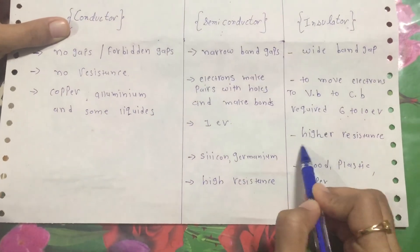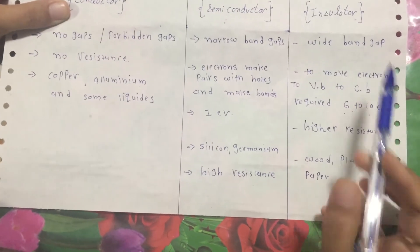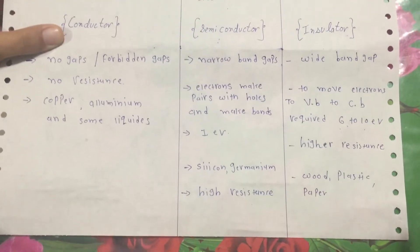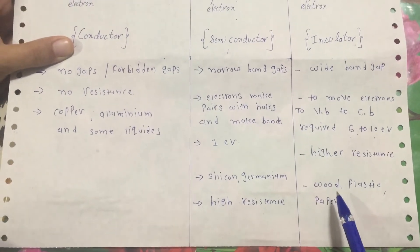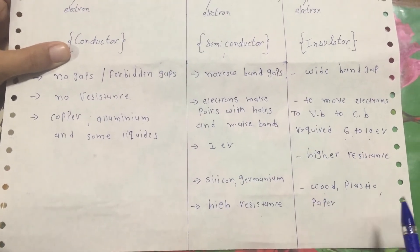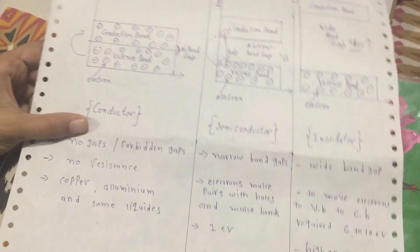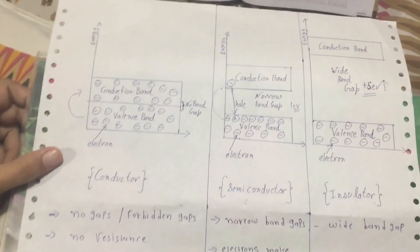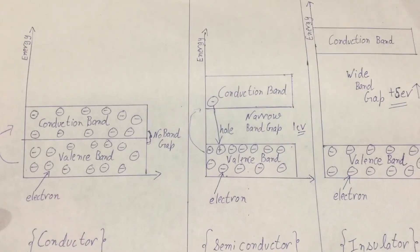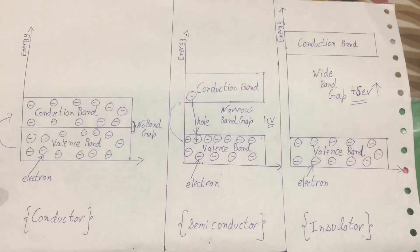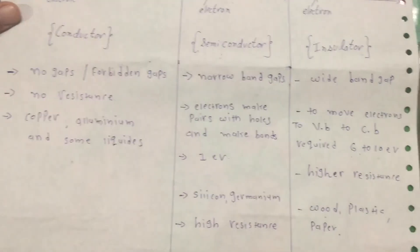There is very high resistance in the insulator. Examples of insulators are wood, plastic, and paper. I hope you understand the concept of conductor, semiconductor, and insulator. Thank you for watching.